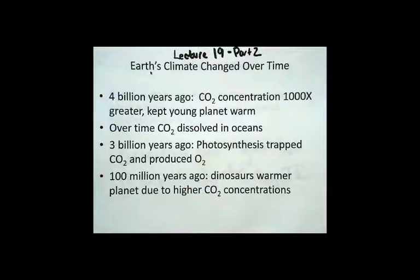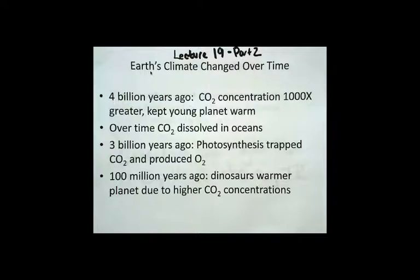Over time, the carbon dioxide in the atmosphere has dissolved in the oceans, and that has served to decrease the carbon dioxide concentration in the atmosphere. Then, three billion years ago, at the advent of small plants in the oceans that could undergo photosynthesis, that was another way that carbon dioxide was trapped from the atmosphere and oxygen was produced.